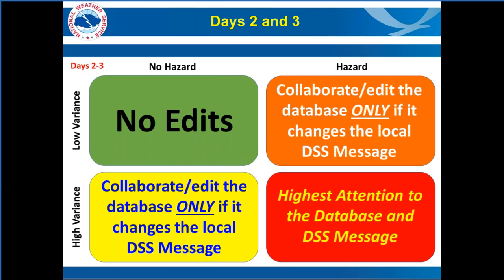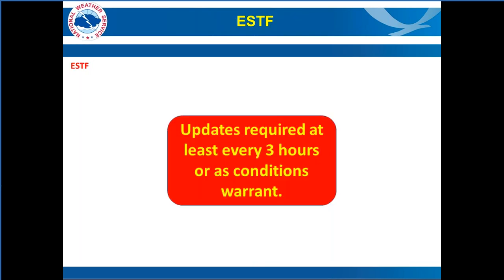For days two to three using the same two-by-two matrix: if there are no hazards and model variance is low, leave it alone. If hazards are expected, more attention to the database is required. If there are hazards and high variability, this is basically all hands on deck — requiring the highest attention to the database and DSS message. For the ESTF period, policy already dictates frequent updates regardless of conditions — at least every three hours or if conditions are changing rapidly. We must own the short term — this is where the human forecaster can excel the most.